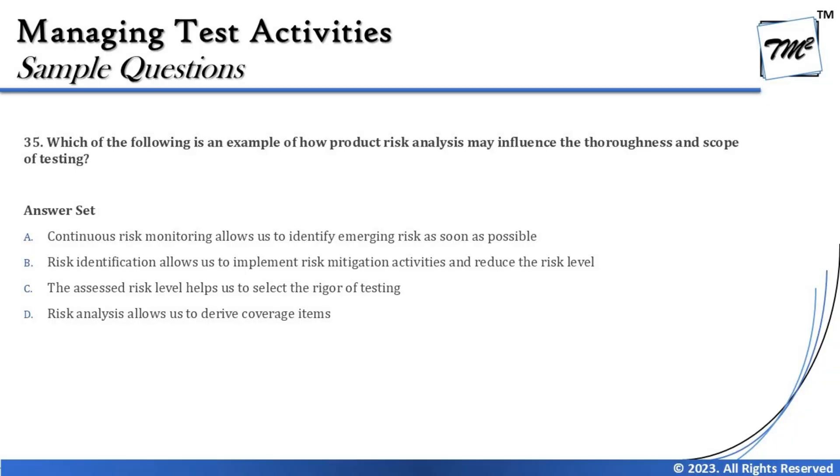The next question is number 35, asking: which of the following is an example of how product risk analysis may influence the thoroughness and scope of testing? Risk analysis is a process that determines the amount of testing, the prioritization, and many other things the testing team follows based on identified and determined levels of risk. A product risk analysis gives us the detail of risk, and based on that assessment we define how much testing to do, how many test cases to write, and when to prioritize.